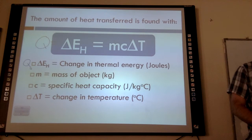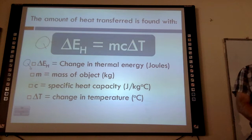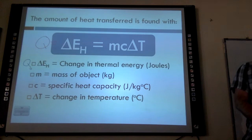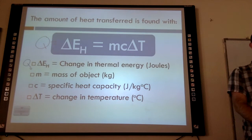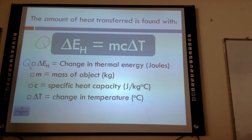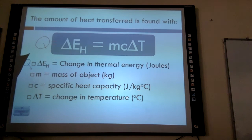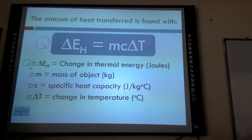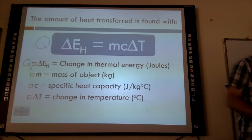M is mass. Specific heat capacity C is a constant value depending on the object — just like your coefficient of friction, it's a constant depending on what object you're dealing with. ∆T is change in temperature. There's a table of specific heat capacities on the back of your formula sheet — air, aluminum, animal tissue, copper, diamond, ethanol — scientists have done a lot of calculations to figure these out.